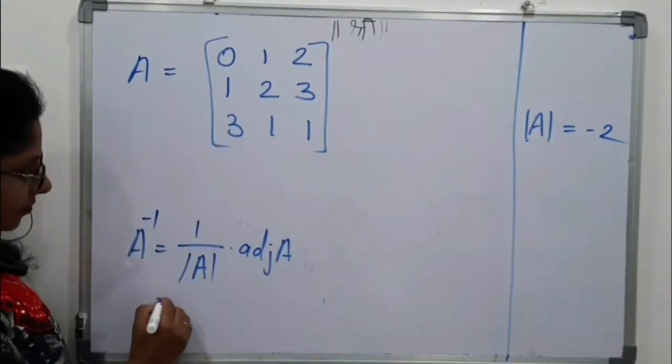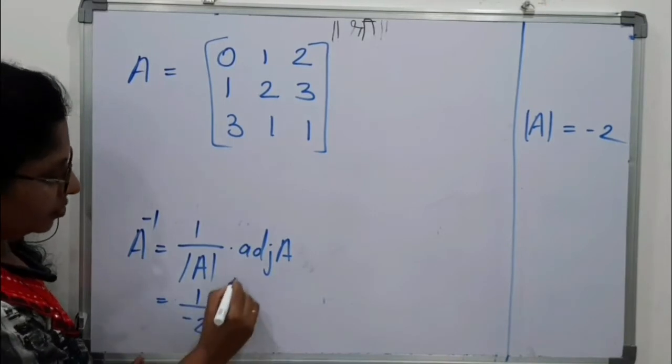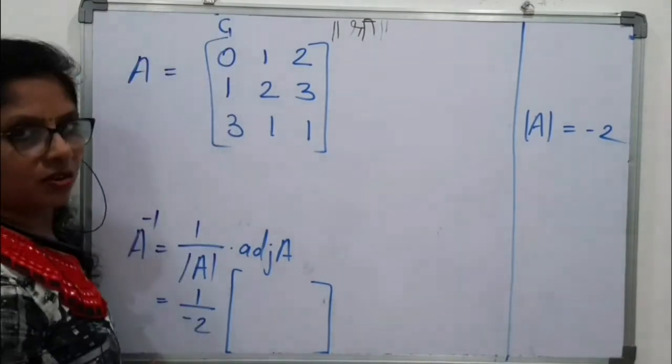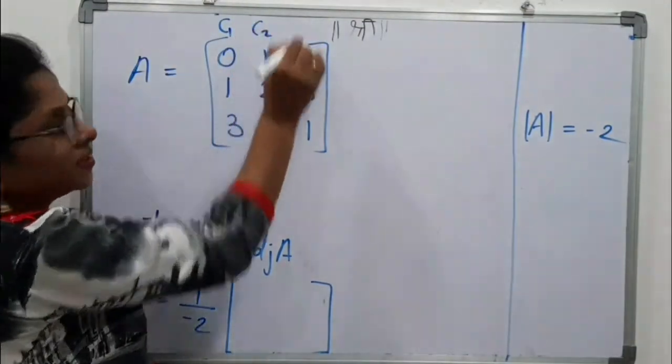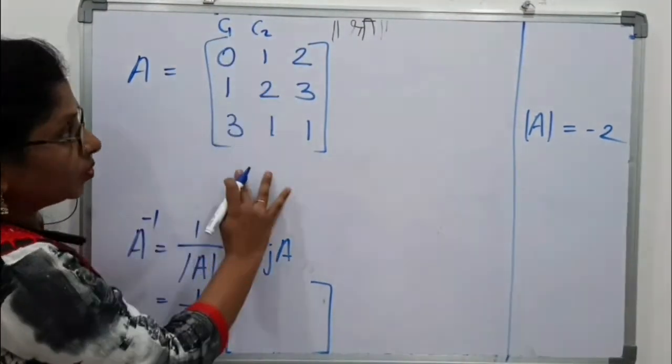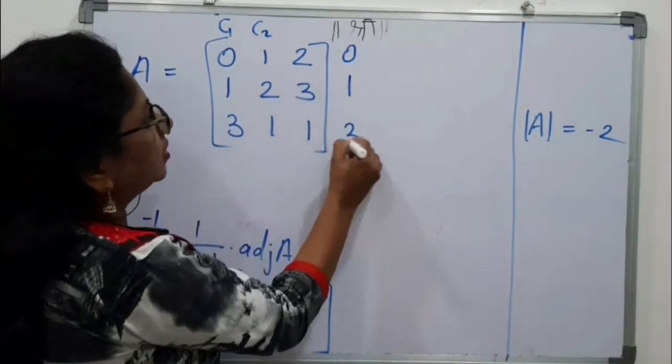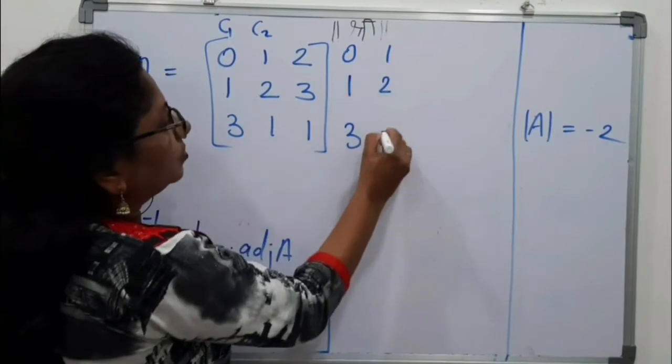So, write down here 1 upon minus 2. Now for adjoin, come here. This is your first column C1. This is C2. Repeat these both columns here. 0, 1, 3, 1, 2, 1.